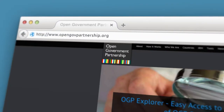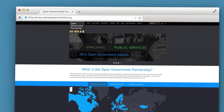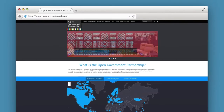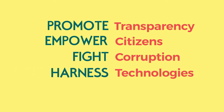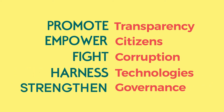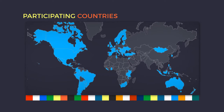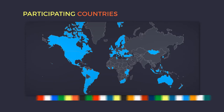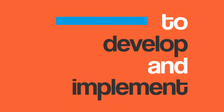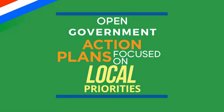OGP was launched in 2011 to provide an international platform that brings together government and civil society to promote transparency, empower citizens, fight corruption, and harness new technologies to strengthen governance. In more than 60 participating countries, government and civil society are working together to develop and implement open government action plans focused on local priorities.